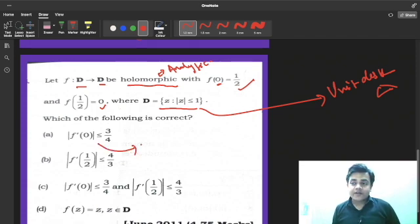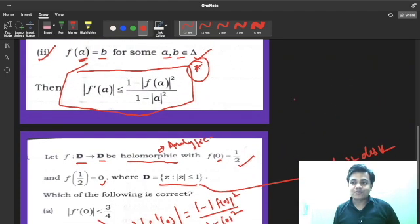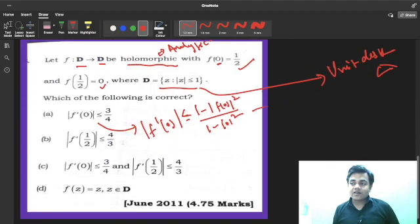Now we can easily obtain mod F dash 0 by using the formula. What was the formula? 1 minus mod F of 0 chi square upon 1 minus mod 0 chi square. You can see the formula. And we cannot forget to use this inequality. Mod F dash a is less than or equal to 1 minus mod F of a square upon 1 minus mod a square. From here, it is 1 minus F of 0 is half, so it will become 1 by 4 upon 1 minus 0. It will become 4 minus 1, so it will become 3 by 4.